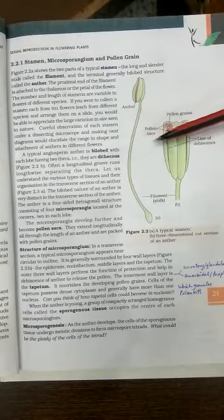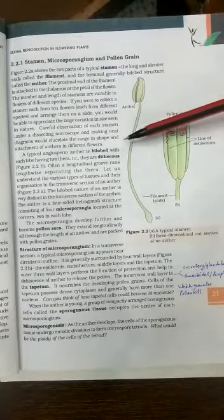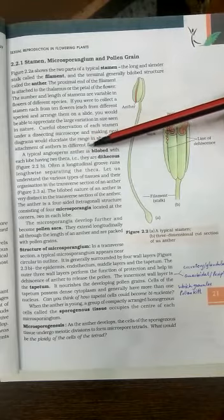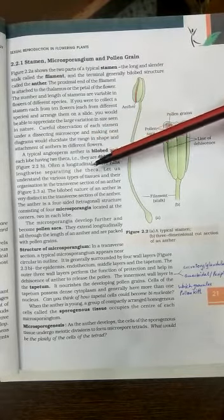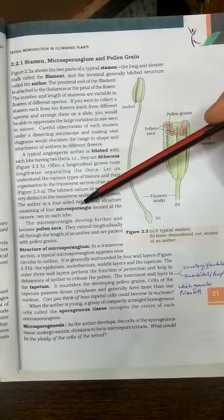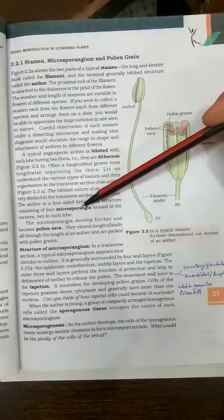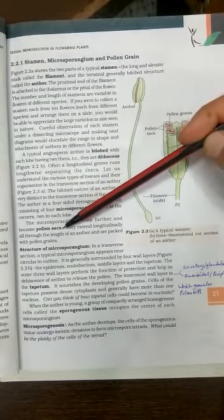A typical angiospermic anther is bilobed and each lobe carries 2 theca. And then NCERT says that there are 4 microsporangia present there. They will later be called as the pollen sacs.